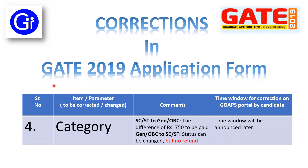The fourth parameter to be corrected or changed is category. Category can be changed from SC/ST to General/OBC or General/OBC to SC/ST. The condition here is: if you want to change your category from SC/ST to General/OBC, you need to pay the difference of 750. And if you want to change your category from General/OBC to SC/ST, the status can be changed but there will be no refund. The time window for correction on the GOPS portal by the candidate will be announced later.